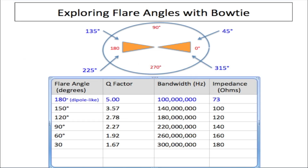First we're going to look at the flare angle. This is what sets the Bowtie Antenna apart from the dipole antenna. The flare angle is the angle between the two arms of the antenna. At 180 degrees, this Bowtie Antenna looks much like the dipole antenna — the dipole just has two elements straight across at 180 degrees. What makes the Bowtie Antenna different is the flare angle.